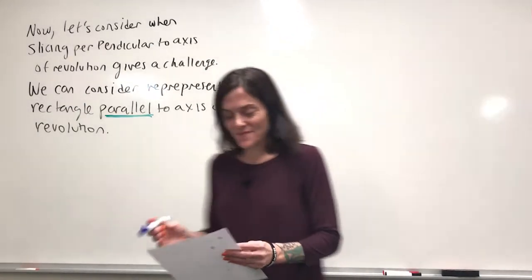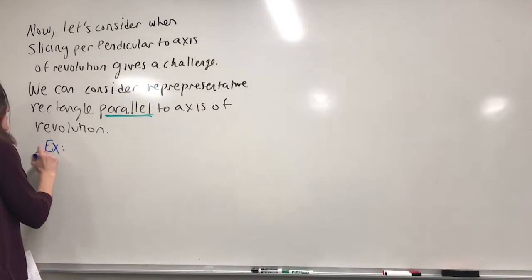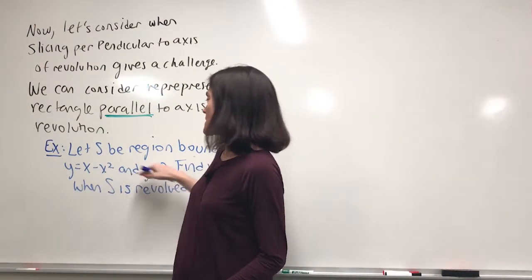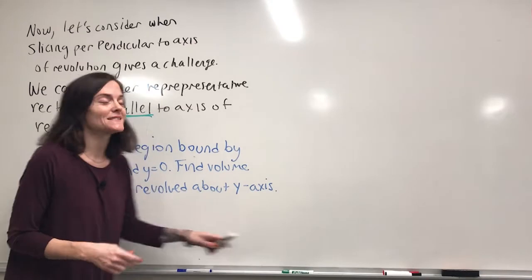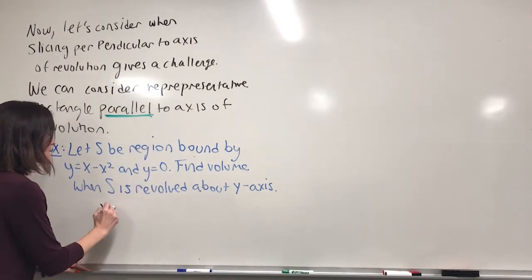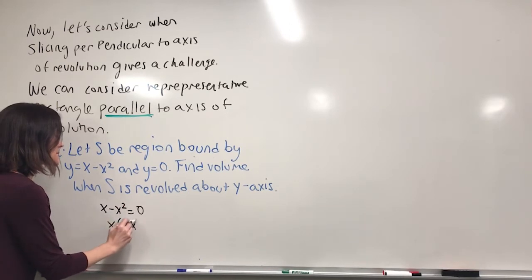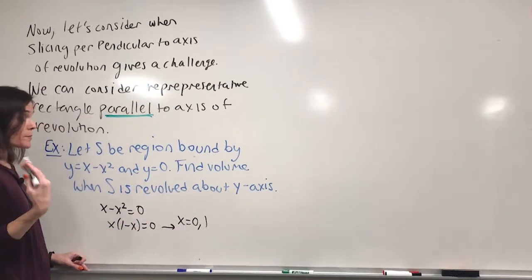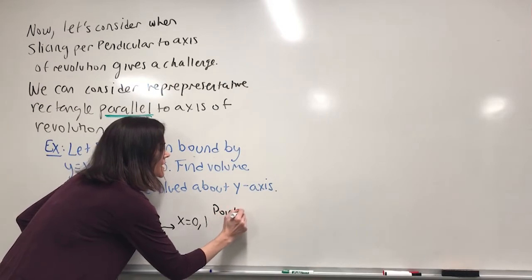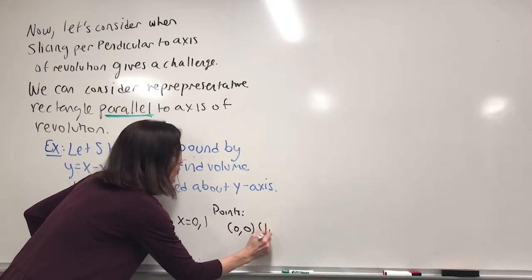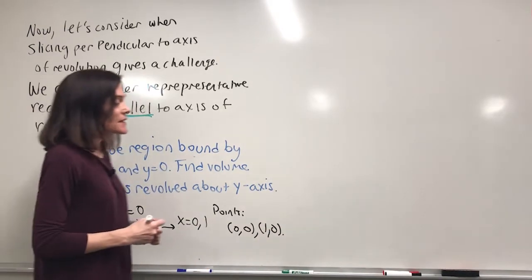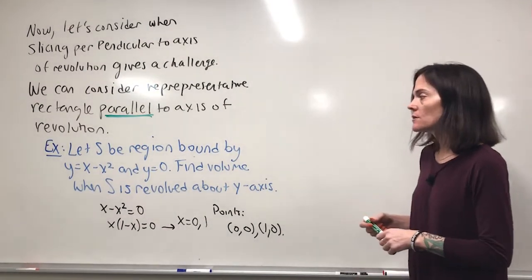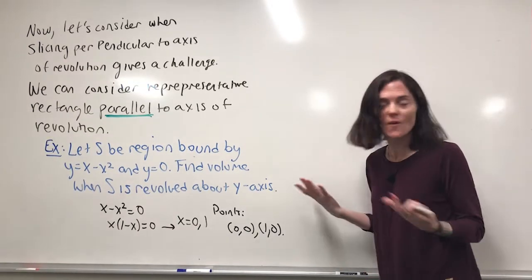Let's look at an example. We have two different curves and we're taking the region bound by the two. We can find where they intersect by setting them equal: x minus x² = 0, so x(1 − x) = 0. They are equal at x = 0 and x = 1, giving intersection points (0, 0) and (1, 0).